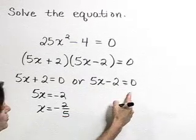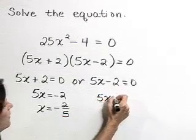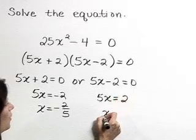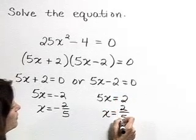With our other linear piece, adding 2 to both sides gives 5x is 2, or x is equal to positive 2 fifths.